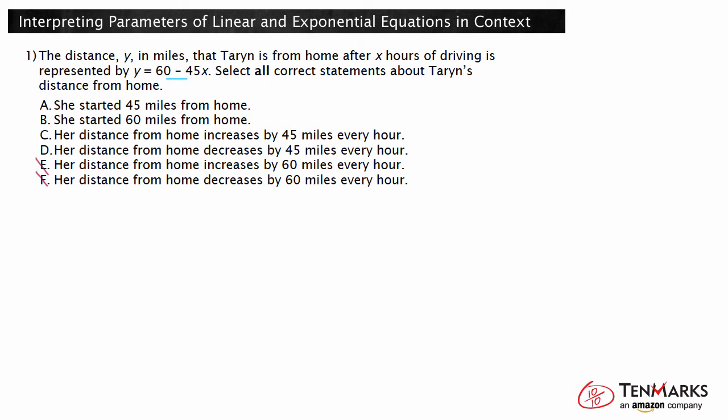This means that the distance from home is decreasing by 45 miles every hour. The value x equals 0 represents the time Terran started driving. Substituting x equals 0 into the equation y equals 60 minus 45x gives y equals 60 minus 45 times 0, so y equals 60. This means that Terran started at a distance of 60 miles from home. So the second and fourth statements are the true statements.